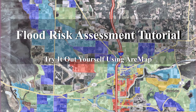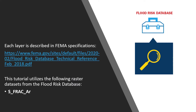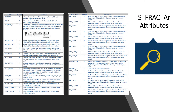The following tutorial outlines steps in ArcMap to perform simple spatial analysis using the flood risk assessment dataset. Each spatial layer in the flood risk database is described in detail by accessing FEMA's flood risk database technical references. This tutorial utilizes the following layers from the flood risk database. The SFRACAR shows the flood risk assessment results per census block. Here is a snapshot of what each attribute in the SFRACAR layer represents.